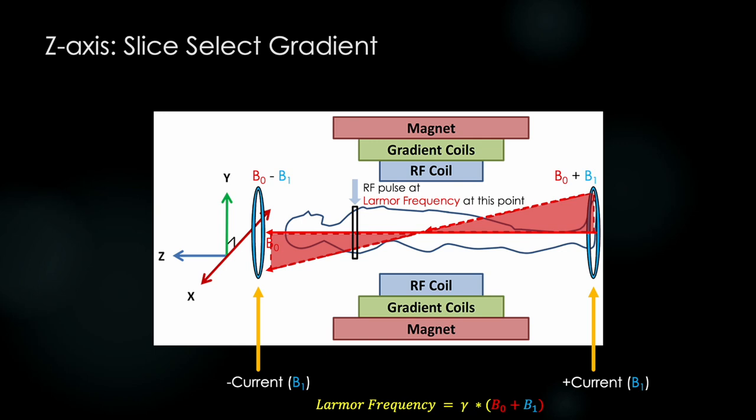One last thing we should mention. Some of you watching this may say, wait a second, any slice we select will never correspond to a single frequency because the magnetic field will vary within that slice. And you're exactly right. We can never achieve a perfect single frequency, nor would we want to because that would select for an infinitesimally small slice.